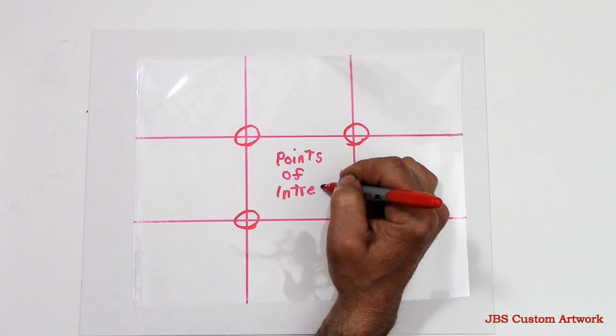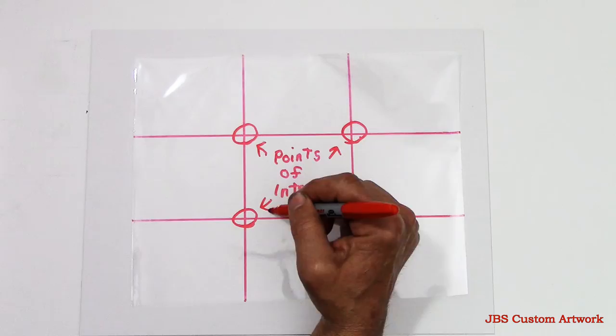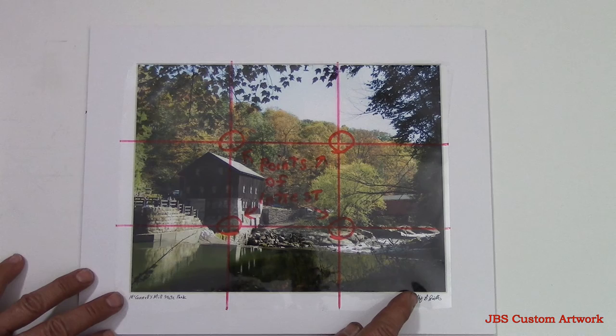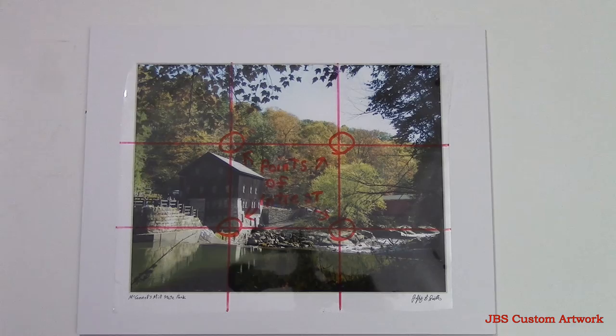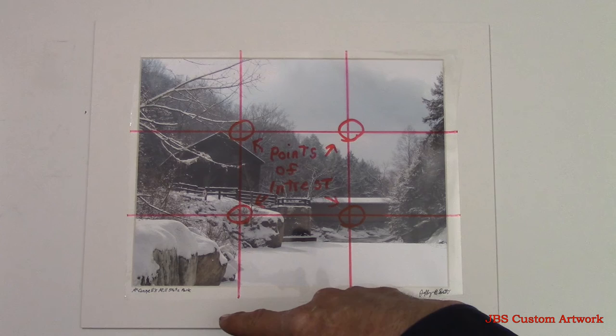To further illustrate this, I'm going to take a sheet and put it over a couple of my images. The points of interest in this image are the mill and the bridge. Here's another shot of the wintertime, and once again the mill and the bridge are the focal points. When the viewer looks at the image, it goes to the focal points then off to the right of the image.